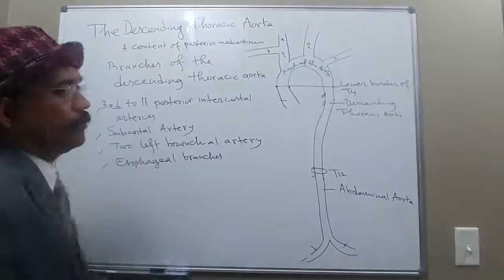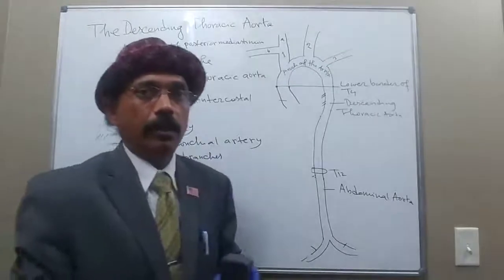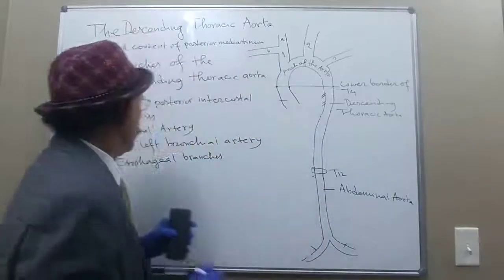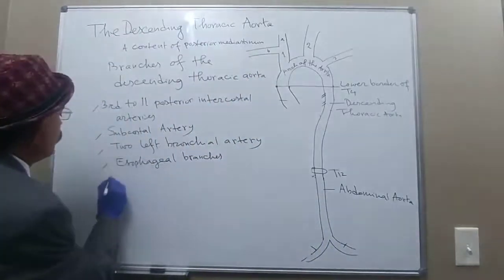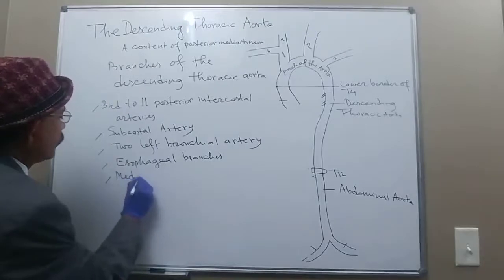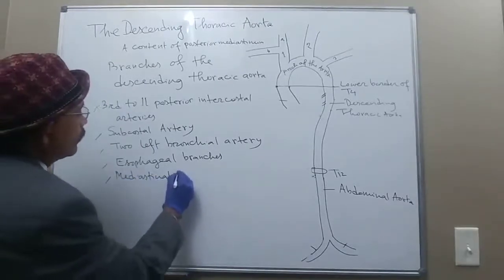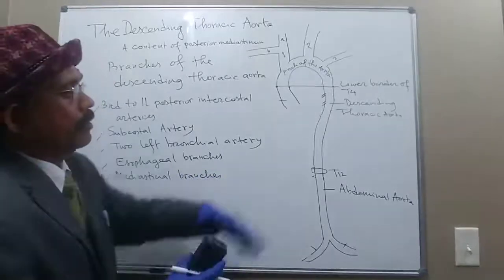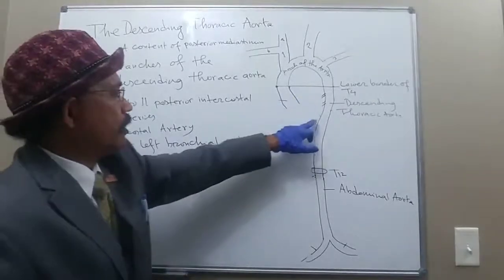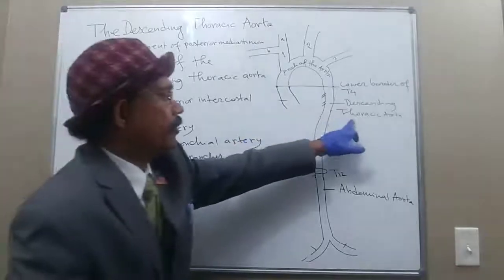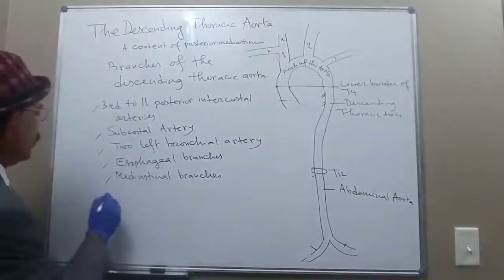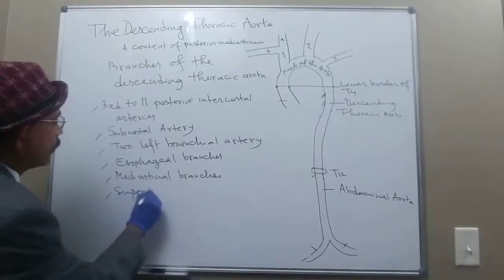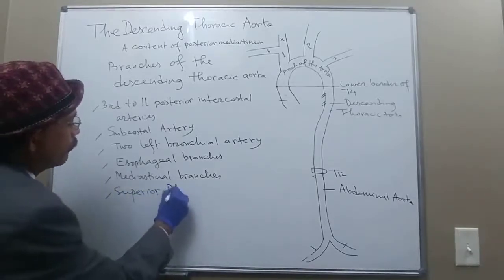It also has multiple esophageal branches, because the esophagus passes vertically down along with the descending thoracic aorta. It also gives mediastinal branches, as well as posterior intercostal branches. In addition, there is the superior phrenic artery.